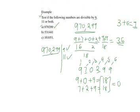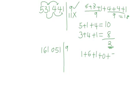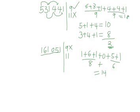Lastly, we have 161,051. Let's start by testing for divisibility by 9. Adding all the digits: 1 plus 6 plus 1 plus 0 plus 5 plus 1. This gives us 8 plus 6, which equals 14. Since 14 is not divisible by 9, this number is not divisible by 9.